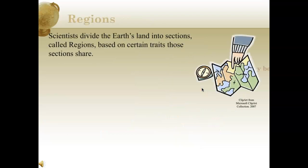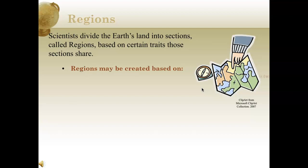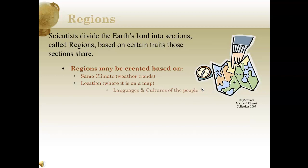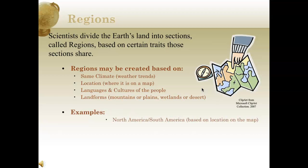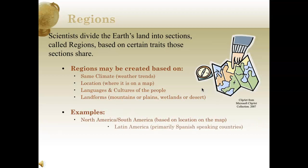Now let's talk about regions. Scientists divide the Earth's land into sections called regions, based on certain traits that those sections share. Regions may be created based on the following characteristics: the same climate, like weather trends; location, where it is on a map; languages and cultures of a people; and landforms like mountains or plains, wetlands or desert.